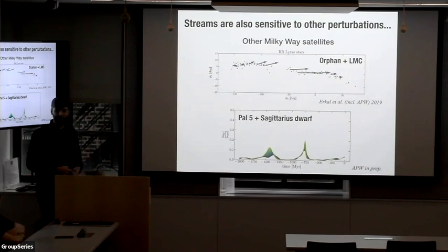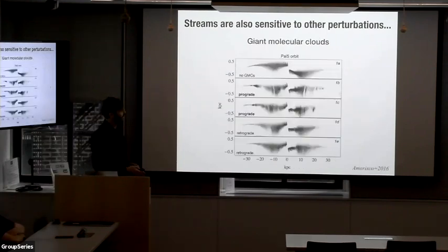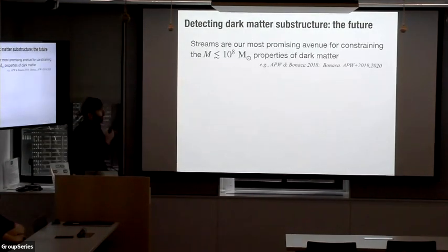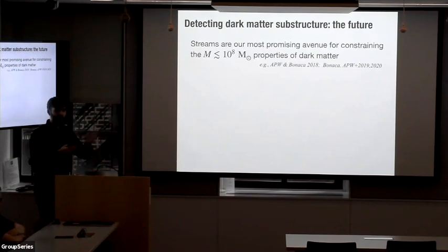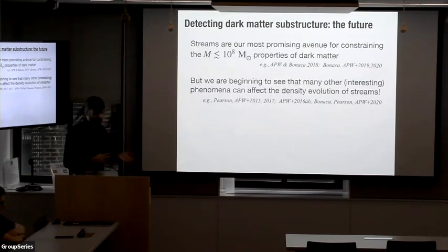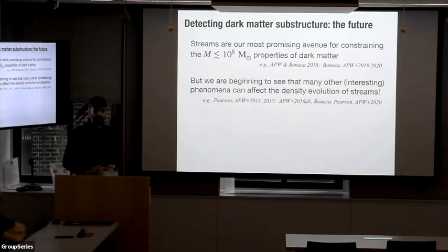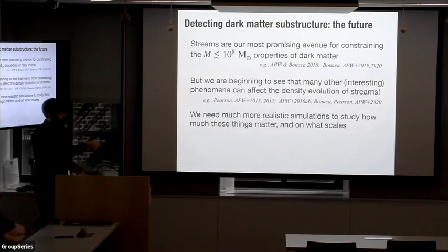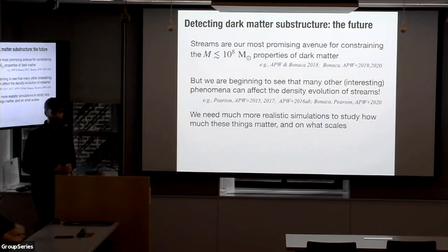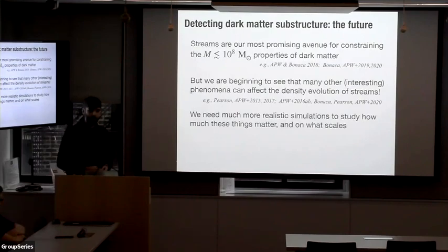So Palomar 5 has really had a rough life — it's actually really surprising that it's such a neat, coherent thing today. It makes you wonder what's hiding behind all of this noise, whether there's lots of perturbed substructure away from the stream. While streams are a very promising avenue for constraining the low-mass end of the dark matter sub-halo population, we're beginning to see that there are many other complex processes in a real galaxy that can also imprint on the density evolution of these streams. We need much more realistic simulations to really understand how much these things matter, so that if we see density variations in a stream, we can uniquely map that back to constraints on dark matter.